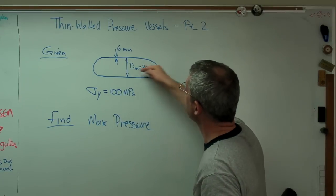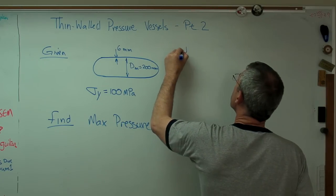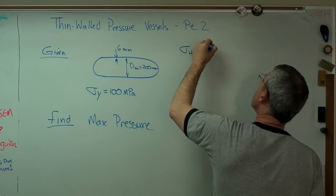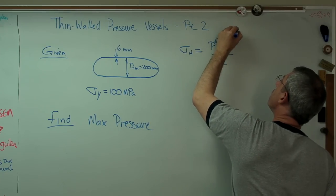So, again, we don't need to worry about the longitudinal stress because we know that's half the hoop stress. Let's look at the hoop stress. Well, we know this is true. Pdm over 2t. Well, that's what we want to solve for.